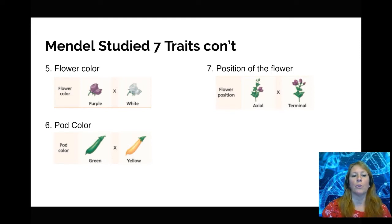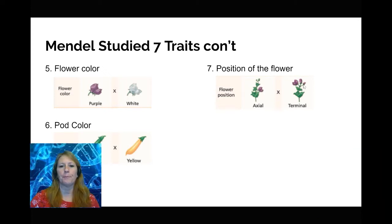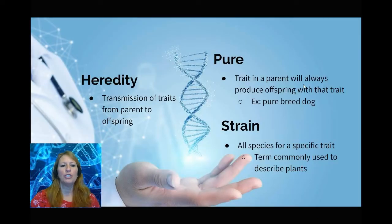He also examined the texture of the seed — round and wrinkled — the color of the flower — purple or white — pod color green and yellow, and the position of the flower on the stem — axial or terminal. Axial means the flowers are directly across from one another on the stem, and terminal means at the end of the stem.